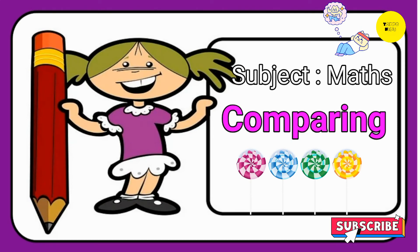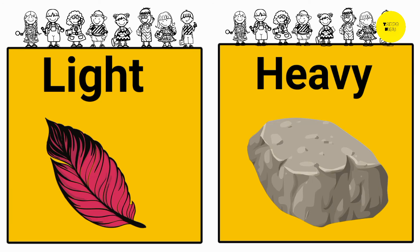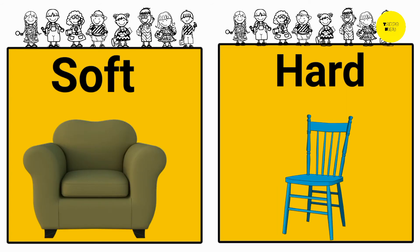Our next chapter is compare the things. More and less. More candies. Less candies. Light and heavy. Feather is light, but stone is heavy. Next, front and back. This is the front of the bear, and this is the back of the bear. Next, soft and hard. Sofa is soft, but chair is hard.